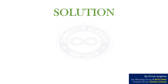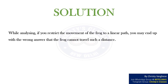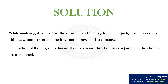Solution: While analyzing, if you restrict the movement of the frog to a linear path, you may end up with the wrong answer that the frog cannot travel such a distance. The motion of the frog is not linear — it can go in any direction since a particular direction is not mentioned.